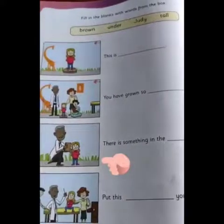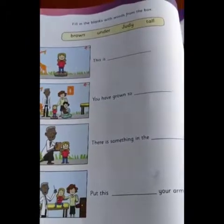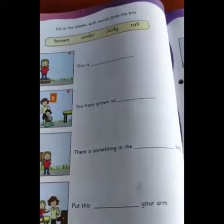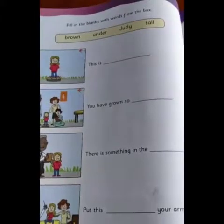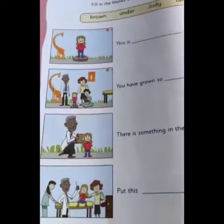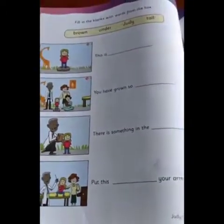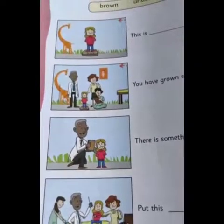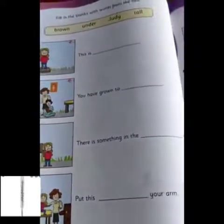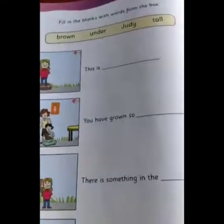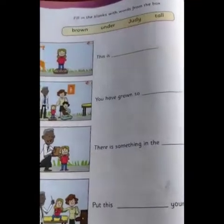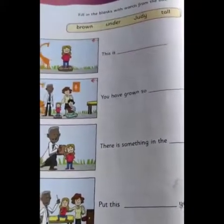Now we move on to the third picture and the third sentence: 'There is something in the ___ bag.' Look at the bag — what is the color of the bag? Choose the right option from the box. The fourth sentence: 'Put this ___ your arm.' See carefully what is in the doctor's hand and where we generally put that. Choose the correct word from the box. I hope you enjoyed completing this activity. Till then, take care, see you!